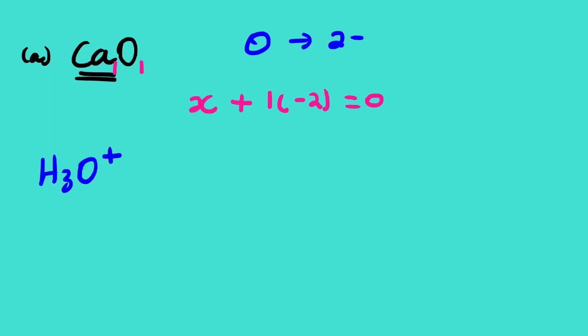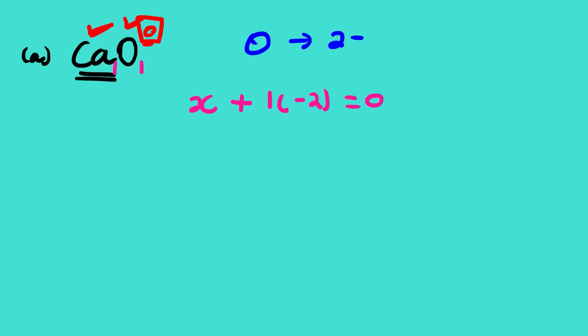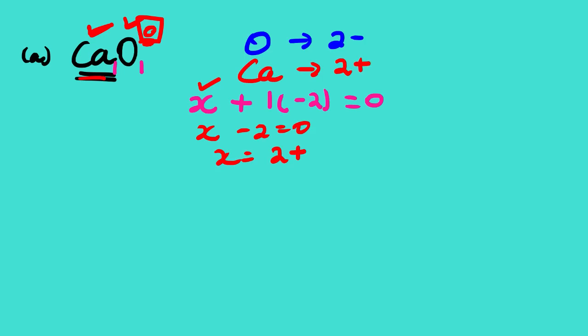So we set x + (1 × −2) = 0, giving x − 2 = 0, therefore x = 2+. The oxidation number of calcium is 2+, which confirms the Group 2 rule. That is how we assign oxidation numbers.